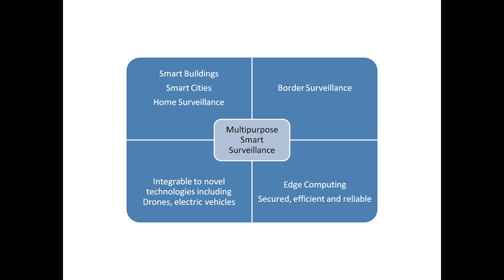Since the Digital India initiative has been taken in our country, this system can be very useful. For example, in families where only elderly people are living alone at home, such a smart surveillance system can be incorporated. If any accident or mishap takes place in the absence of the owner, the camera can not only detect but also alert the user about the accident so that necessary action can be taken in time. Another major application is border surveillance.